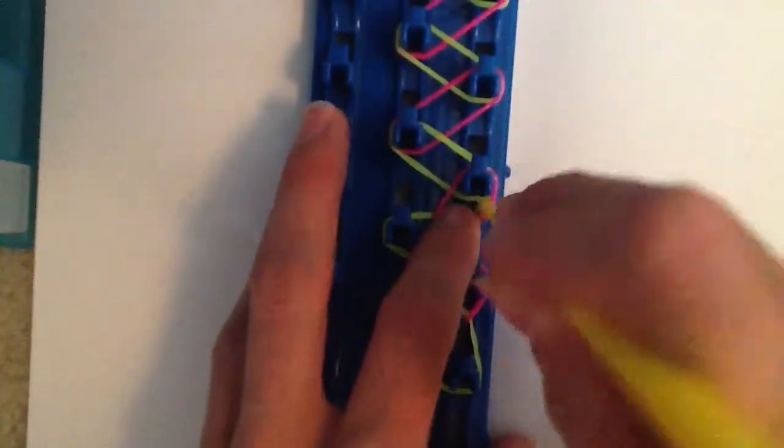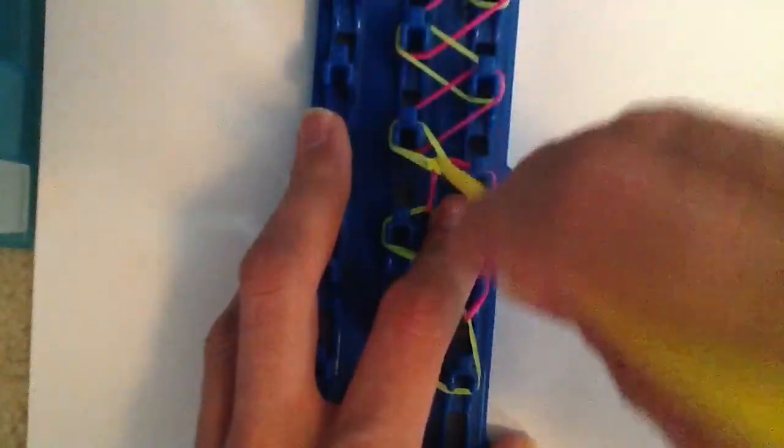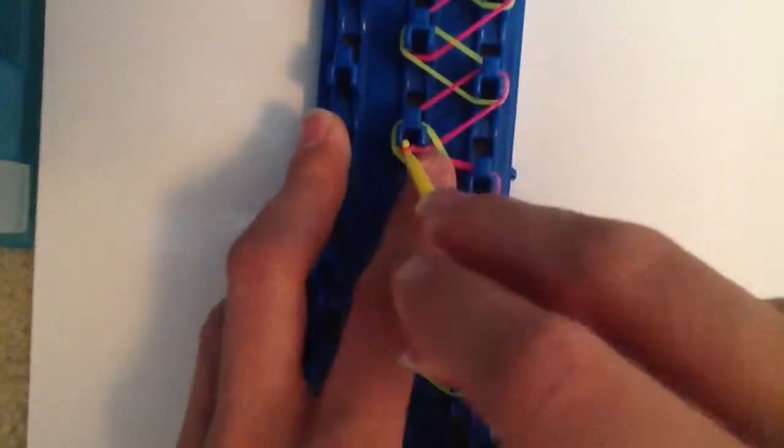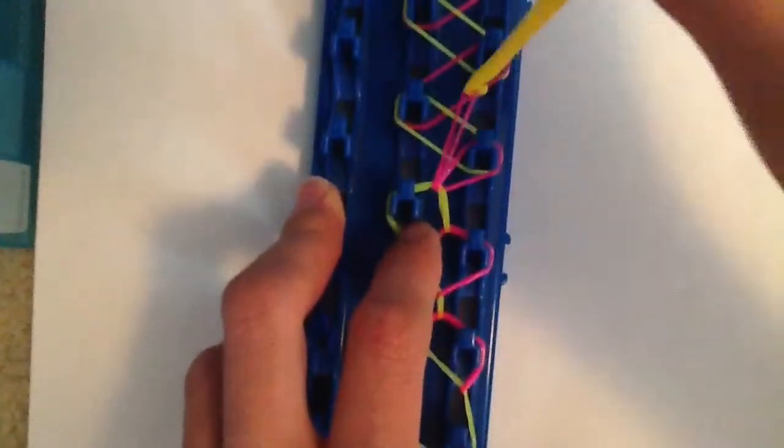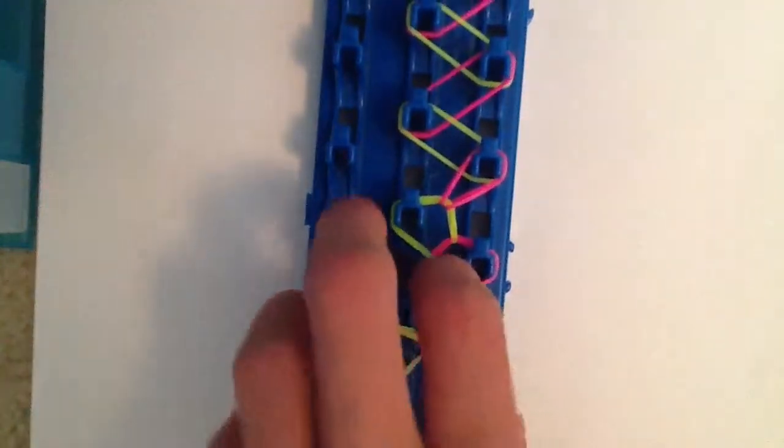Pull back that pink band and grab that yellow band and pull on itself. Pull back that yellow band and then grab that pink band and loop on itself. So that's what you should be doing all the way down your loom.